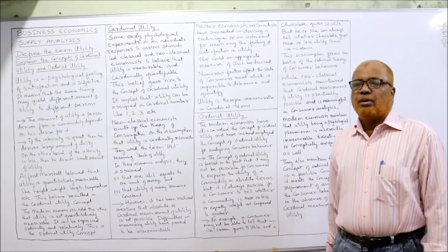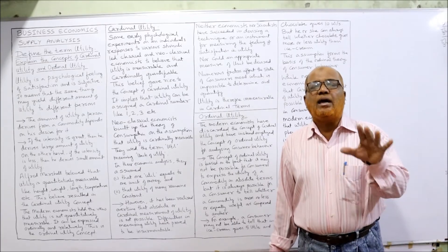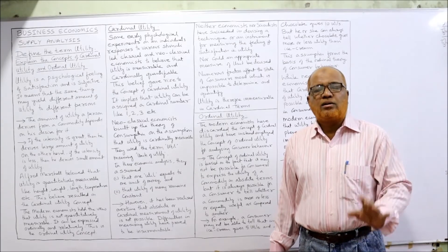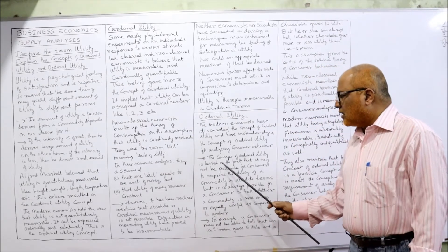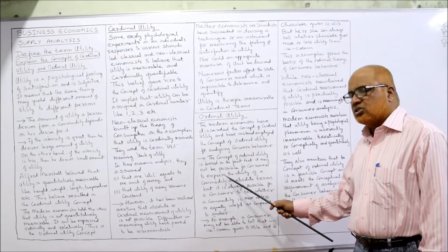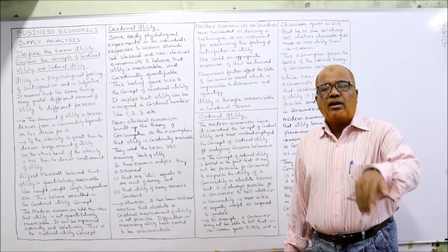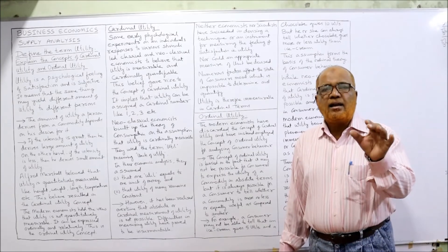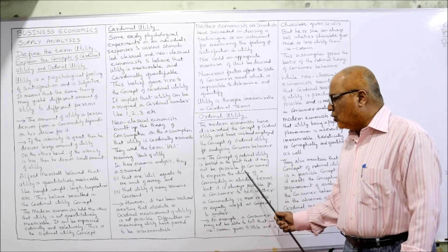When we want to analyze the behavior of the consumer, we cannot apply cardinal utility — we cannot measure the satisfaction. Modern economists have given the theory called ordinal utility. The concept of ordinal utility is based on the fact that it may not be possible for a consumer to express the utility of a commodity in absolute terms. People cannot measure exactly how many units of satisfaction they got by consuming goods.